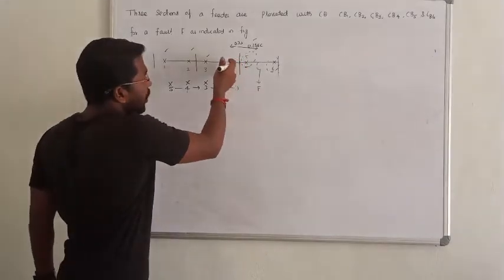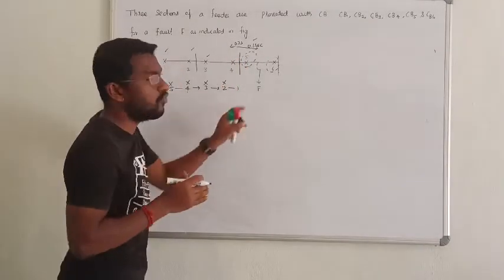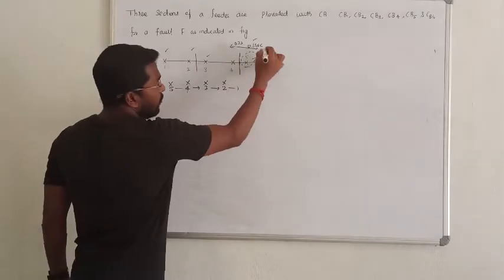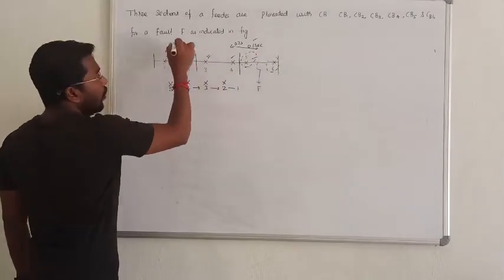So that is how the circuit breakers follow the sequence from the fault location. The correct answer is: first 5, then 4, 3, 2, 1. That is the correct answer for the given question.